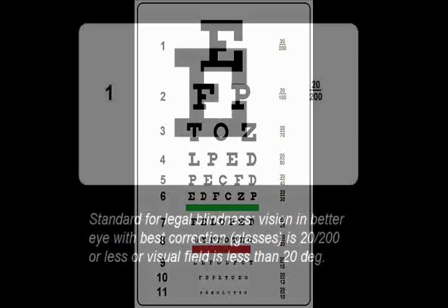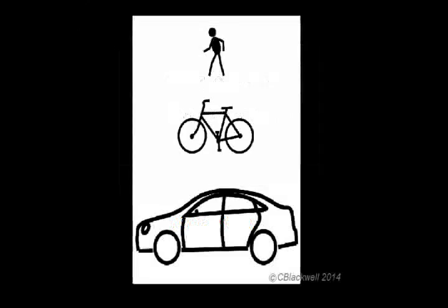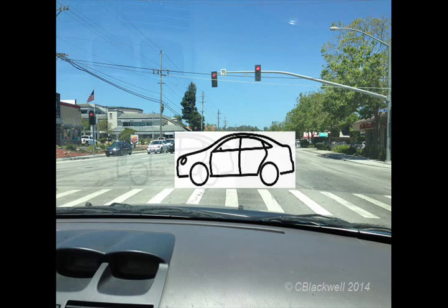Visual acuity as measured on a standard vision chart is the test we are most familiar with. It uses high contrast letters usually presented in a dimly lit room. Even if the chart images were more practical, the testing situation is still quite artificial. Driving does not involve nice clean high contrast targets in perfect bright light conditions without glare and without distractions.